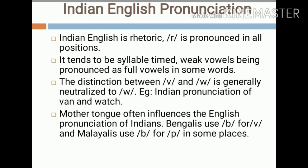Another important speciality is that the mother tongue often influences the English pronunciation of Indians. India has different states with different regional languages. For example, Bengalis use a B sound for the V sound, and Malayalis use a B sound for P in some places. For example, Malayali speakers sometimes pronounce the word 'temple' as 'demble.' These are the pronunciation differences of the Indian English variety.